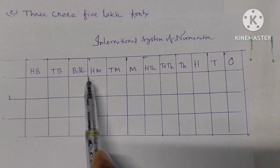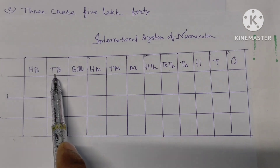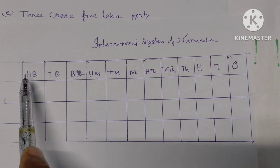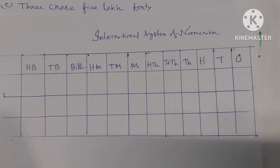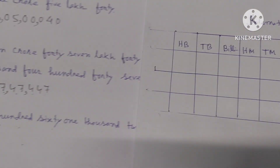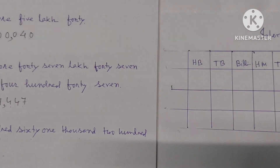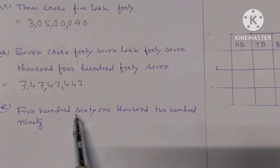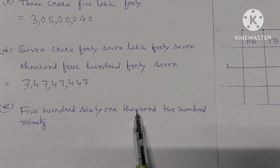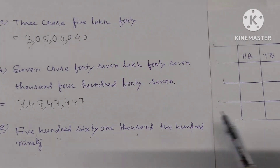Five hundred sixty-one thousand two hundred ninety — placing digits: 5 in hundred thousands, 6 in ten thousands, 1 in thousands, 2 in hundreds, 9 in tens, 0 in ones.